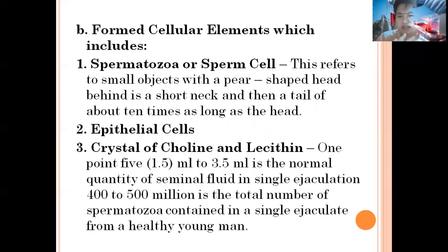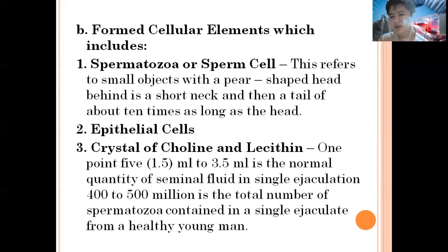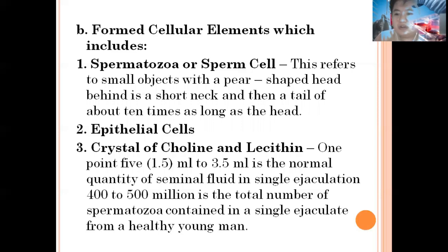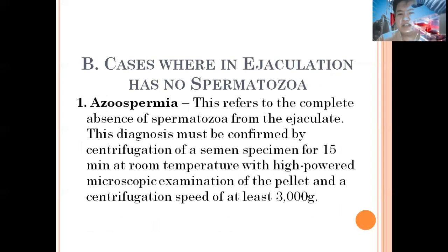There are also epithelial cells in semen. These come from the urinary part of our body organs. The purpose of epithelial cells is to serve as a barrier separating our internal organs from the outside, in order to prevent viruses from entering our body. Lastly, we have crystals of choline, also called lecithin.